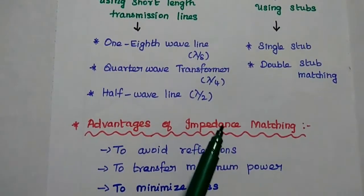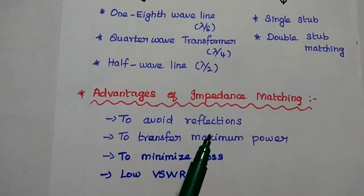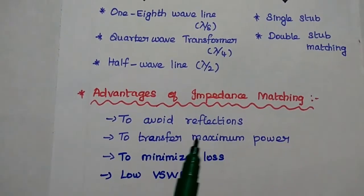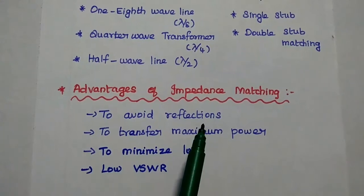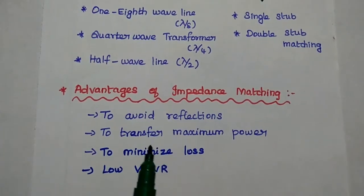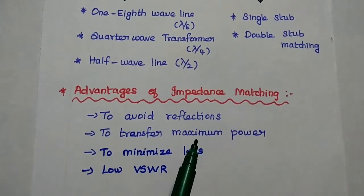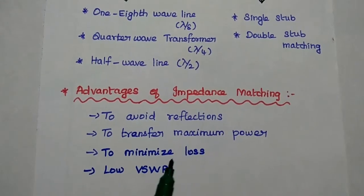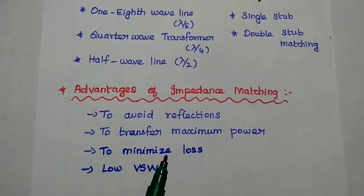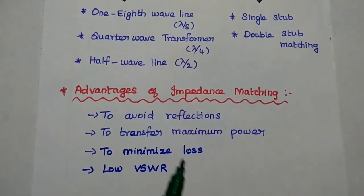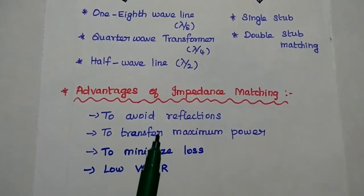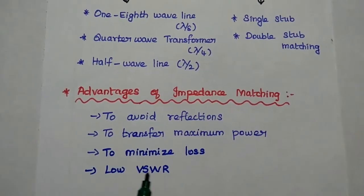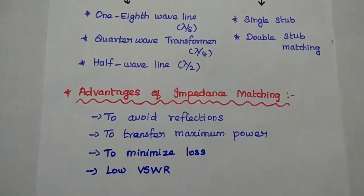The advantages of impedance matching: it is mainly used to avoid reflections and to transfer maximum power, to minimize loss, and to achieve a low VSWR. These are the major advantages of impedance matching techniques.